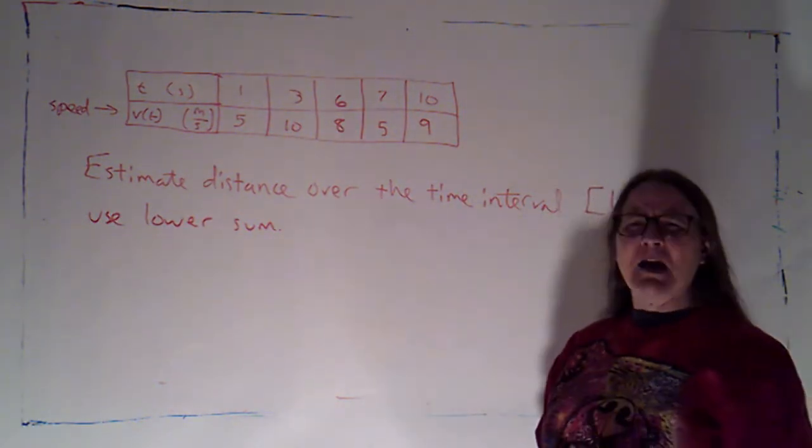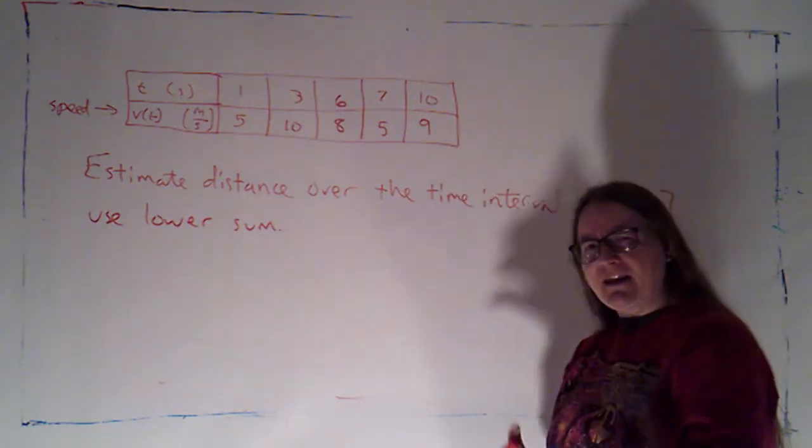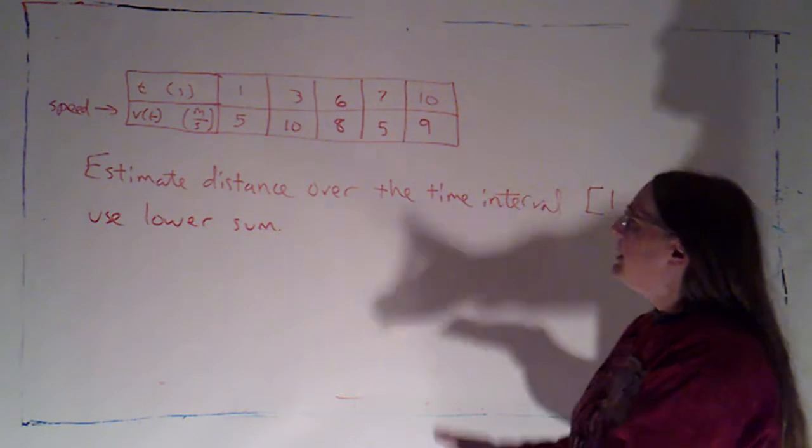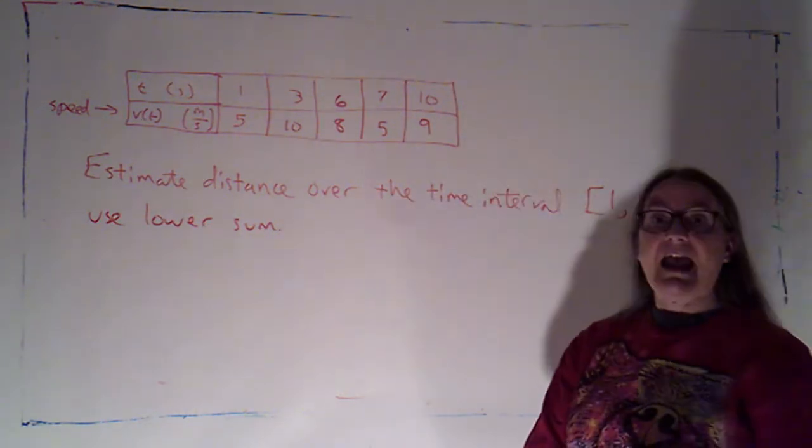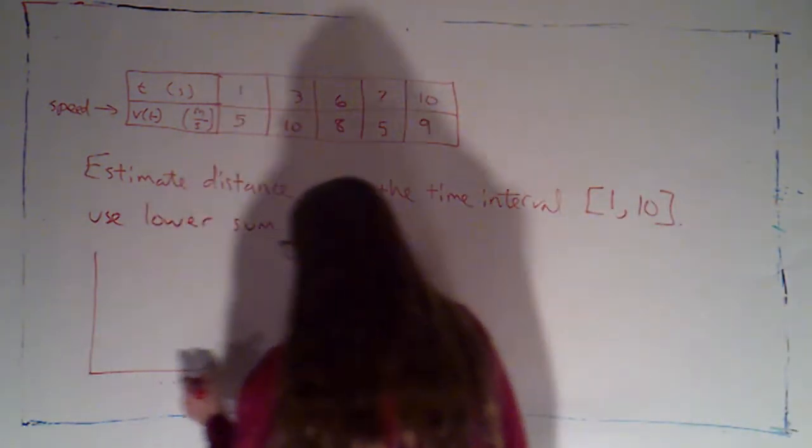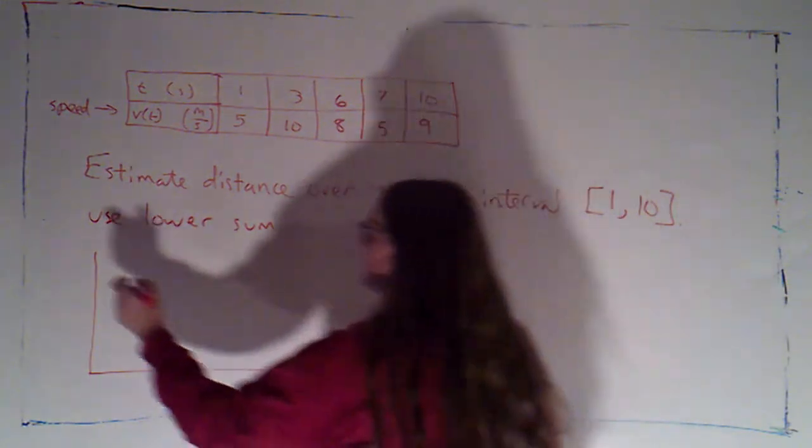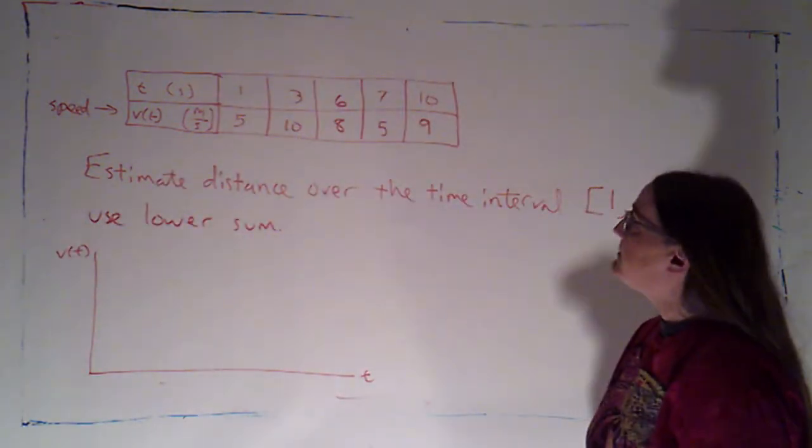So I can't use a regular partition, because I don't have that data. Now generally, if you're setting up an experiment, and you're taking measurements, you want to take them at regular time intervals. But this is the data that we have. So I'm going to have to just work with what I have. I want a picture. So I'm going to start by putting t here, and v of t, which since it's positive, is the same as speed.